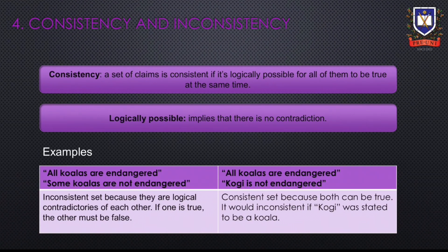Next, we look at consistency and inconsistency. A set of claims is consistent if it's logically possible for all of them to be true at the same time. Logically possible means that there is no contradiction. Consider these two sets: 'All koalas are endangered' and 'Some koalas are not endangered' — this is an inconsistent set because they are logical contradictions; if one is true, the other must be false. By contrast, 'All koalas are endangered' and 'Kogi is not endangered' is a consistent set because both can be true. It would be inconsistent if Kogi was stated to be a koala.